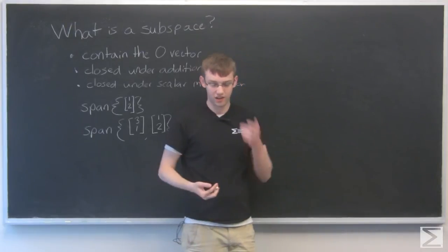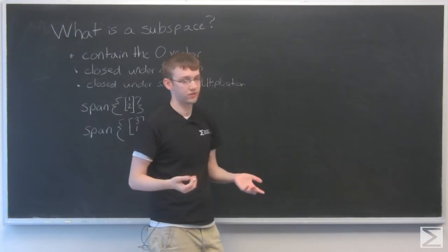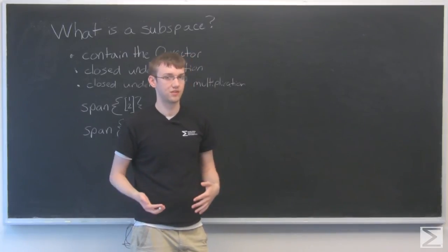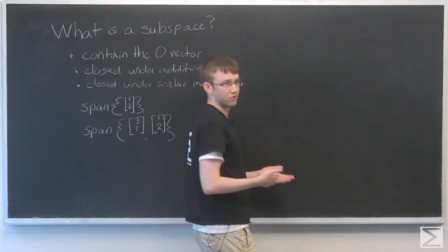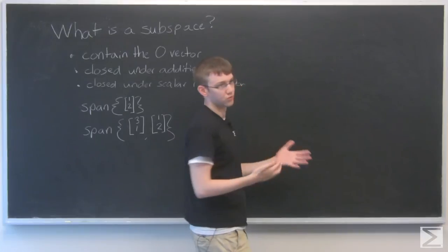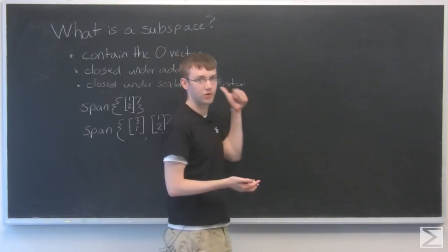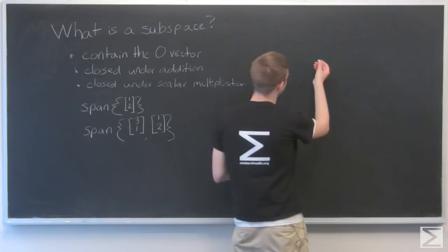The other way you get a subspace is if you're given some sort of rule for vectors. And this you don't see as common, but we like to throw it around and we'll give you a rule. And so is this a subspace, and you have to figure out whether it obeys these rules. So here's an example.